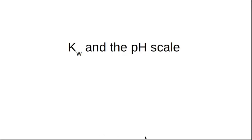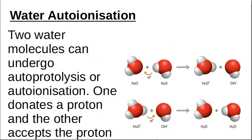Now we're going to talk about the equilibrium constant for water and the pH scale, because these two are interrelated with each other. We're going to figure out how to calculate pH and what it's got to do with the auto-ionization of water.